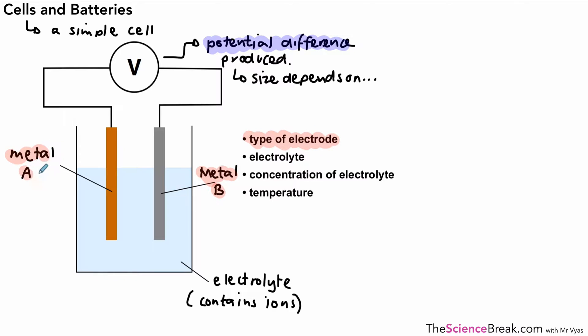The second one is the electrolyte that we use. Also the concentration of electrolyte, and also the temperature has an effect on the potential difference produced in a simple cell like this one.